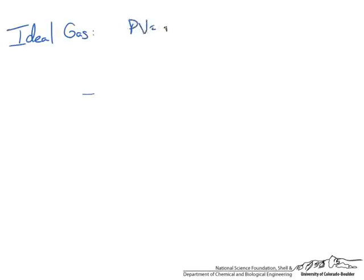Going back to an ideal gas mixture, we have PV = NRT, and I am going to rewrite this just in terms of pressure, writing V as V total. The number of moles of species i, designated as N_i, would take up the same total volume alone at the same temperature, yielding a pressure of that species.